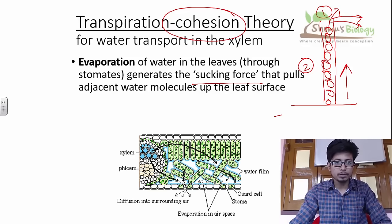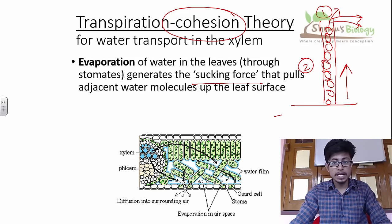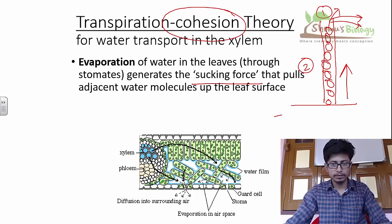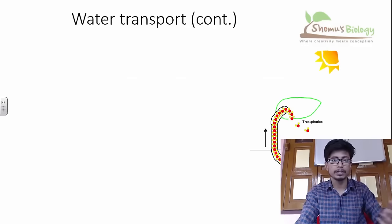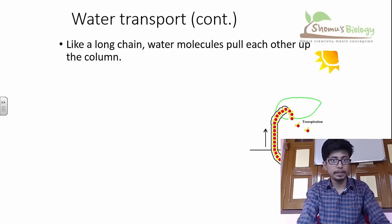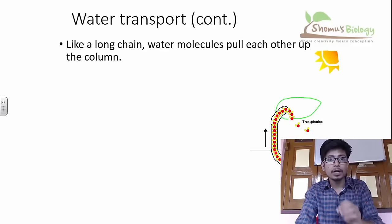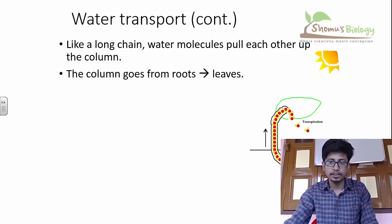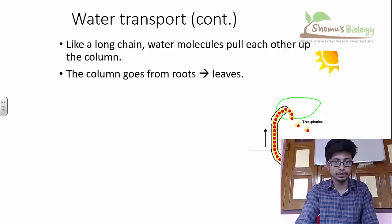In plant leaves we have both xylem and phloem. As the water is evaporating, we gradually take it upward. Looking at the big picture of transport, it's a chain of water molecules connected one after another by cohesive force, moving from roots towards the leaves.